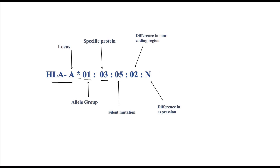There are further details of the allele as well, but for solid organ transplant assessment, up to these four digits are usually used. With improvements in molecular techniques, more detailed analysis is also possible. The next field in the allele name tells about a silent mutation in the allele, and the field after that indicates if there is a difference in the non-coding region. So two alleles can differ only in their non-coding region. An alphabet at the end gives information about the expression of the allele — for example, N indicates a null allele, meaning the allele is not expressed. Other letters include L for low cell surface expression, S, or C.